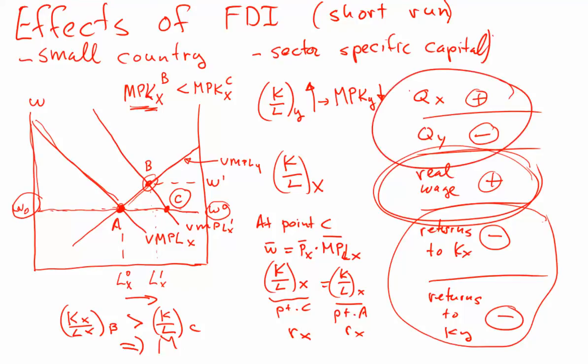We also have these impacts on production levels. This short-run analysis shows that the impact on different groups within the economy from foreign direct investment is divergent. This is one of the reasons why FDI can sometimes be controversial in the host country — domestic capital owners face the possibility of seeing their returns fall as capital moves in. This will be a different story in the long run, but this is the story for FDI in the short run with specific capital.